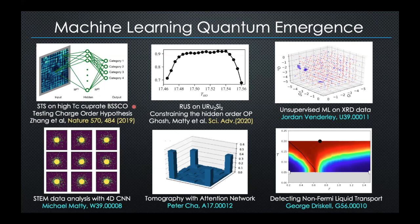I'm going to be mostly talking about work on STM data analysis doing hypothesis testing and XRD analysis trying to extract order parameters in an unsupervised way. We've also been working on scanning transmission electron microscopy data — STEM data analysis, which is also a kind of inverse problem — together with David Mohler. My student Peter Chow has been working on quantum state tomography with an attention network type of neural network architecture used for machine translation, using IBM Q data. We've also been looking at simulated data from quantum Monte Carlo simulations, trying to see if we can use a neural network to learn about the quantum critical region and non-Fermi liquid transport.